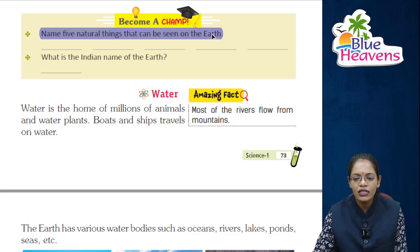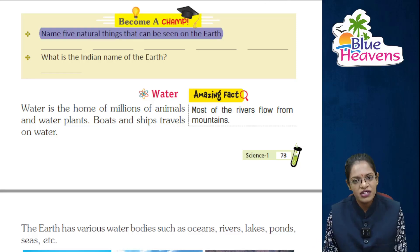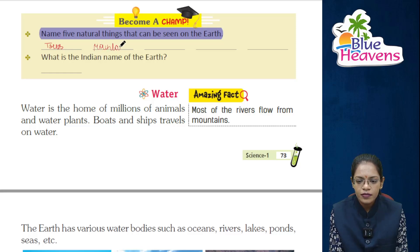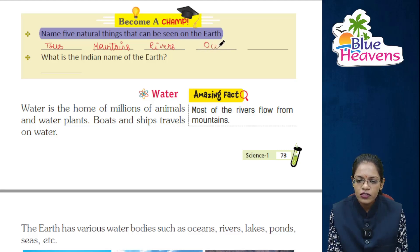Name five natural things that can be seen on the Earth. The answers are: trees, mountains, rivers, oceans, and hills.